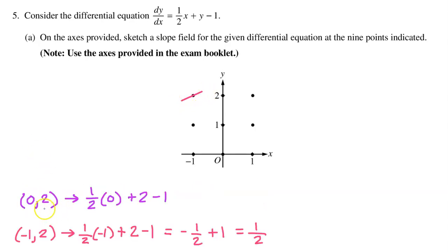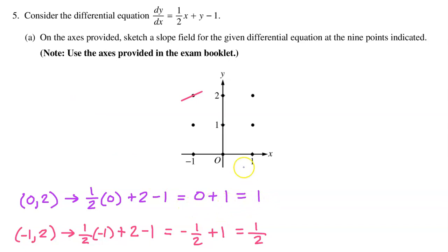At the point (0, 2), we have one-half times zero plus 2 minus 1. This equals zero plus 1, which equals 1. So draw a slope of 1, a 45-degree angle.